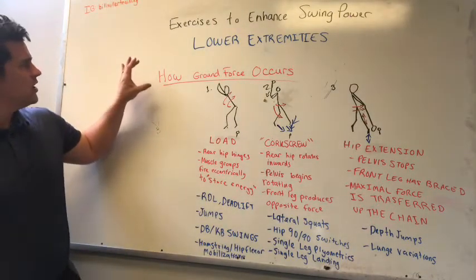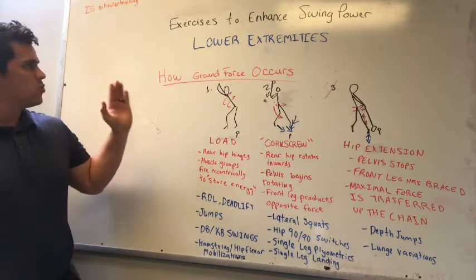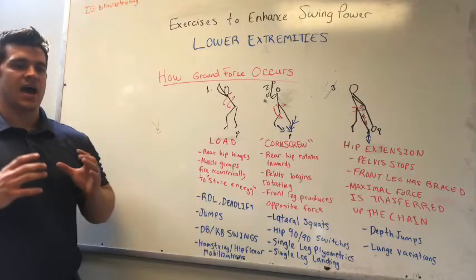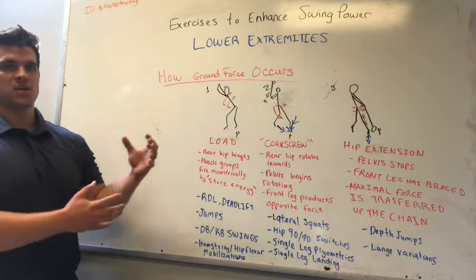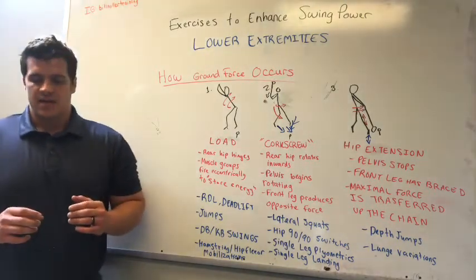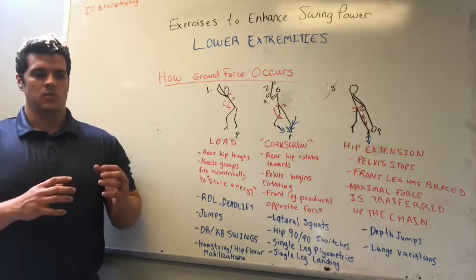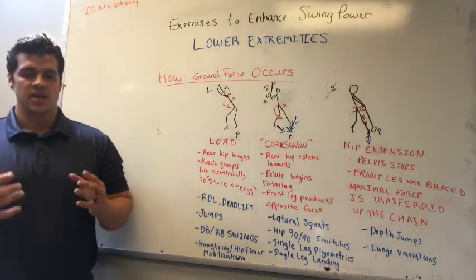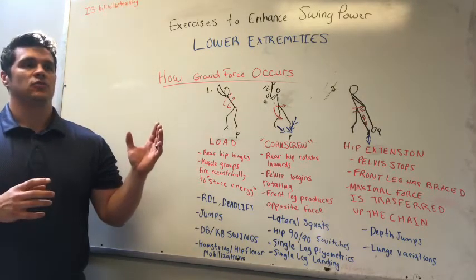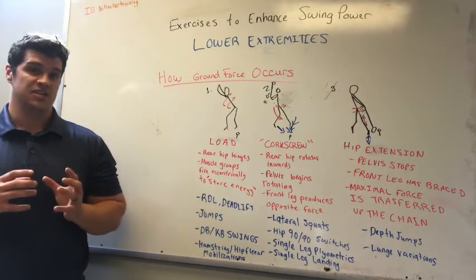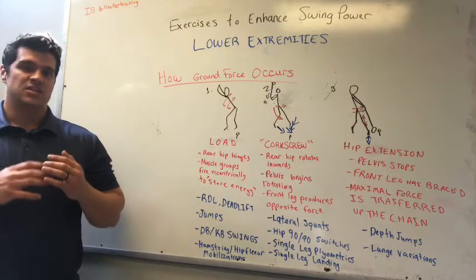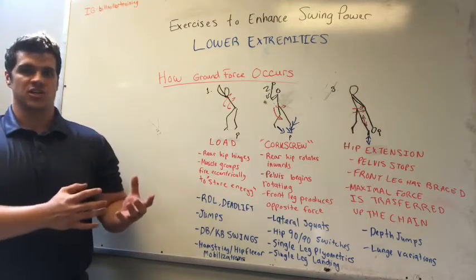What I want to start with is how ground force occurs — the very start of the swinging action — and how it can impact all of the force development throughout the entirety of the swing. When we swing and produce power, it's a result of both force and velocity. The lower body is the main determining factor for overall force production in the swing.